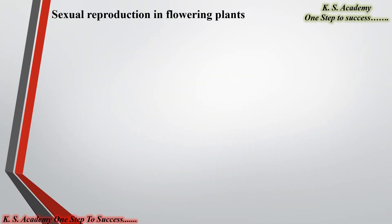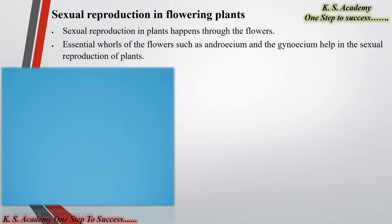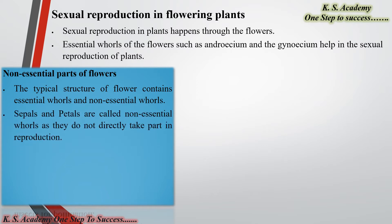Sexual reproduction in a flowering plant happens through the flowers. The essential parts of the flower such as the androecium and gynoecium help in sexual reproduction. The typical structure of a flower contains essential parts and non-essential parts. Sepals and petals are called the non-essential parts as they do not directly take part in reproduction.